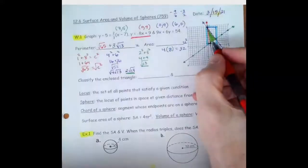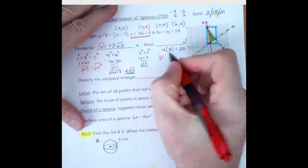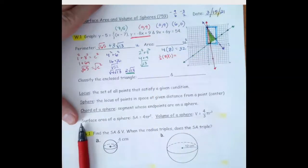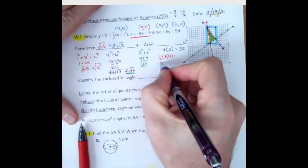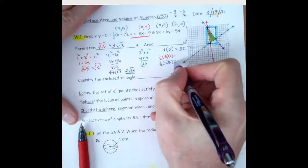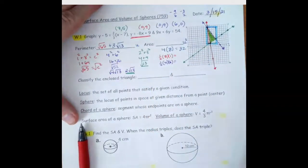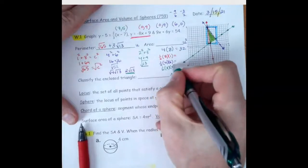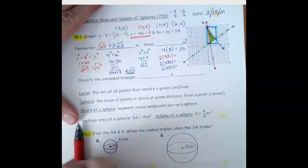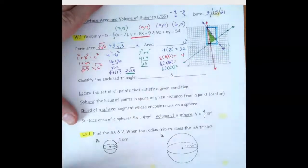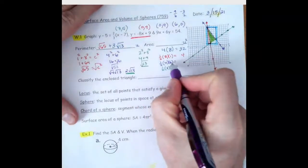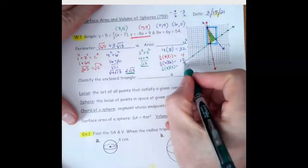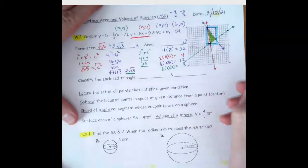Now if we find the area of the surrounding triangles: the red triangle is 1/2 of 8 times 1. The purple triangle is 1/2 of 4 times 6. The little green triangle is 1/2 of 3 times 2. So the red gives 4, the purple gives 12, and the green gives 3. Adding those together: 4 plus 12 plus 3 is 19.